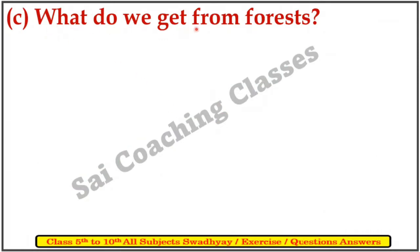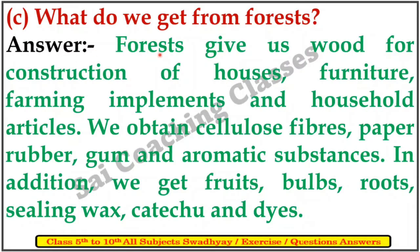C. What do we get from forests? Answer: Forests give us wood for construction of houses, furniture, farming implements and household articles. We obtain cellulose fibre, paper, rubber, gum and aromatic substances. In addition, we get fruits, bulbs, roots, and various other forest products.